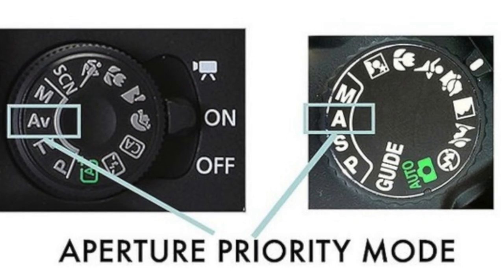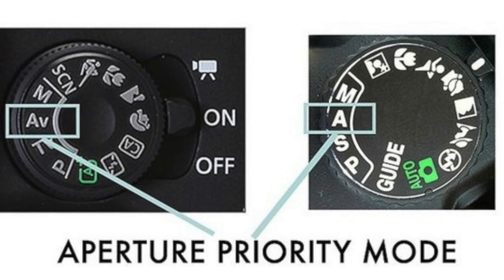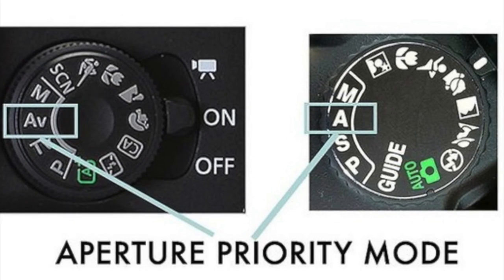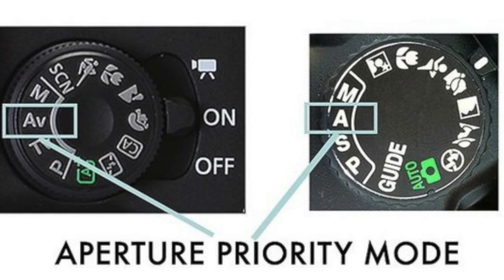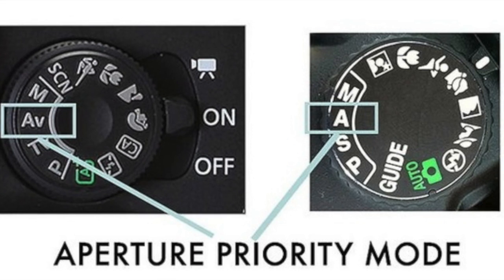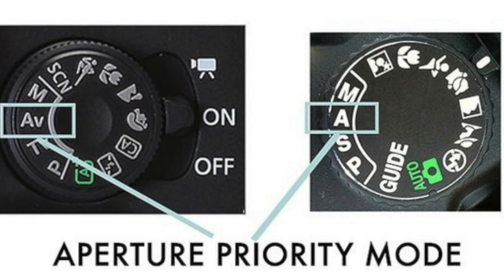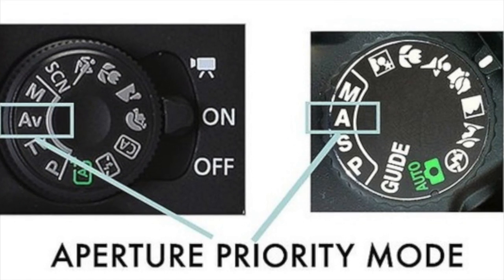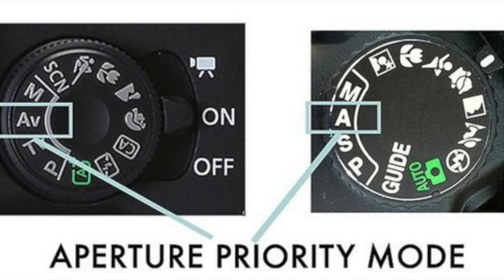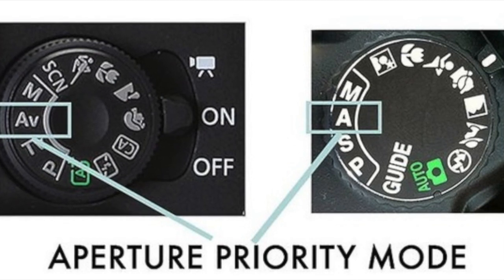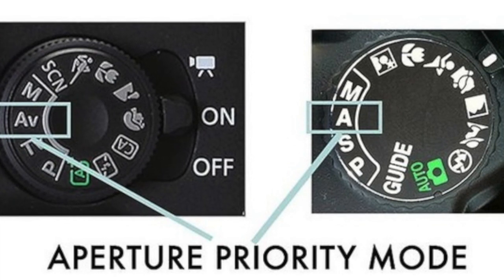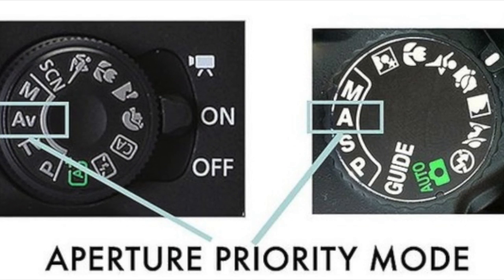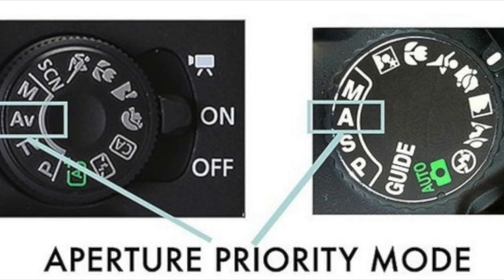Selecting a shooting mode will determine how your camera behaves when you push the shutter. When you select Auto, for example, the camera will determine everything to do with the exposure — or the act of taking and recording a shot — including the aperture and the shutter speed. I'm going to talk about those terms in the next video segment. All of the other modes are there to give you a little bit more control over how you take the shot.